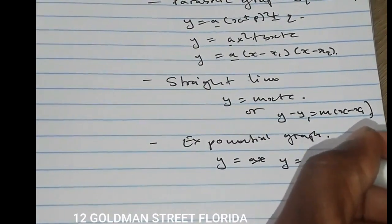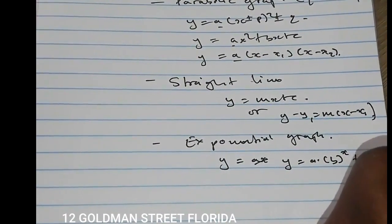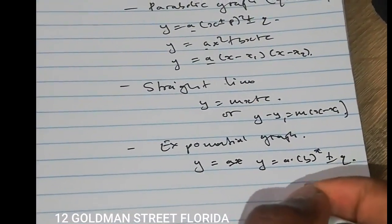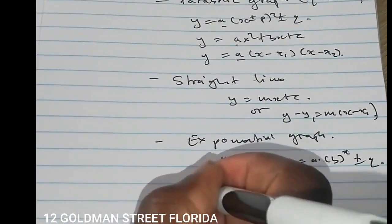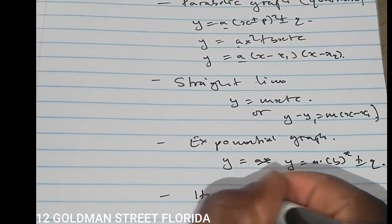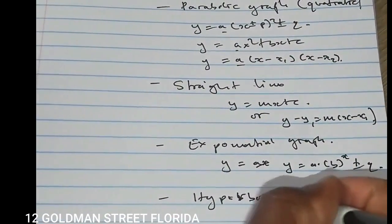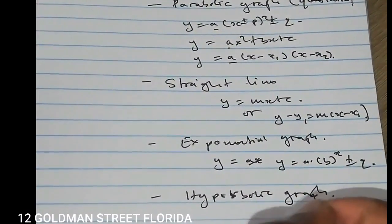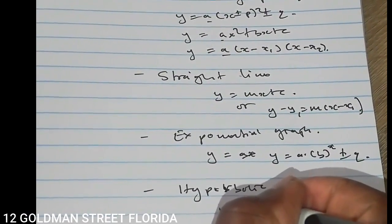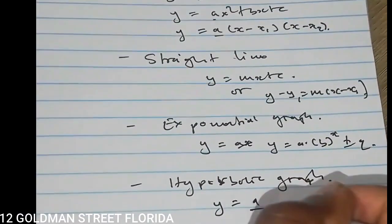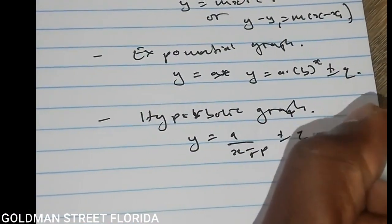The exponential graph is given by y = ab^(x) ± q. We also looked at the hyperbolic graph, which is given by y = a/(x ± p) ± q.